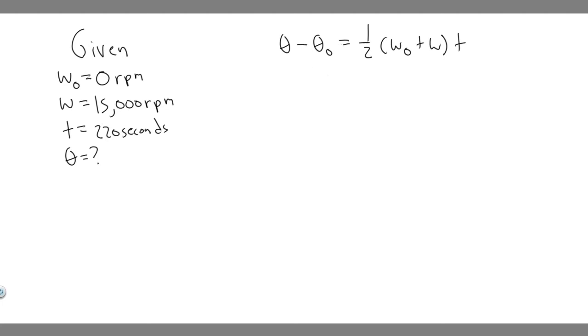So theta sub zero is just going to be zero because it starts without any angle when it turns in the beginning. So it's really just going to be theta equals one half times, and when we do this, keep in mind the initial angular velocity is zero, so this is zero plus. And then when we do this, keep in mind what this is going to be in. We're solving for revolutions.